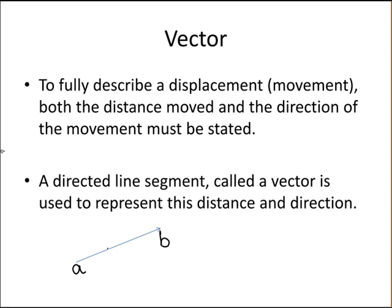Here we have the line segment AB represents the vector AB. This is written as AB with an arrow overhead to indicate the direction. The length of the line segment from A to B represents the distance and the direction of the arrow indicates the direction of this distance.